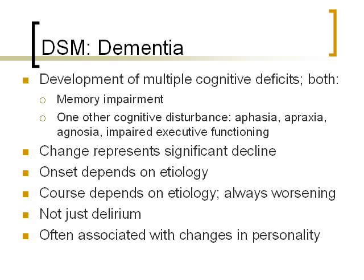Dementia is often associated with changes in personality. Sometimes this seems to result from irritability or frustration with the cognitive impairments — being upset that you can't remember things or name things can make you grumpy and cause a personality change. But sometimes the personality change results from the same disease process causing the cognitive symptoms, as with Huntington's disease, where the disease attacking the brain can directly cause personality change independent of the person's awareness of their memory loss.